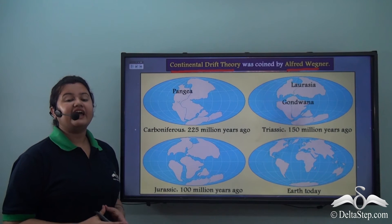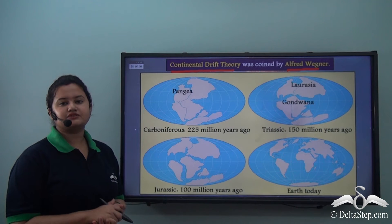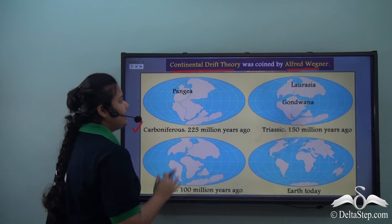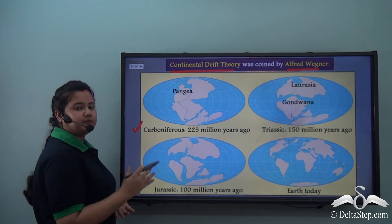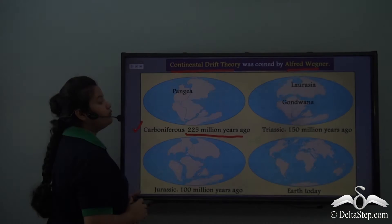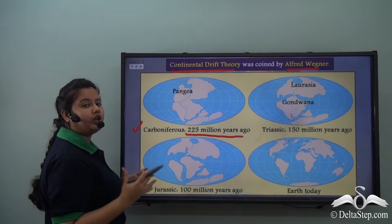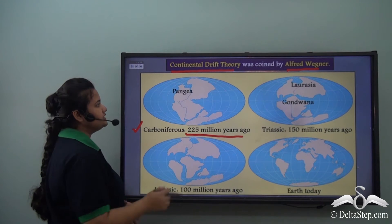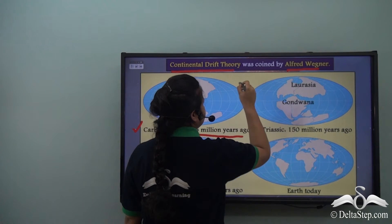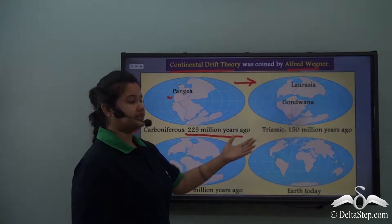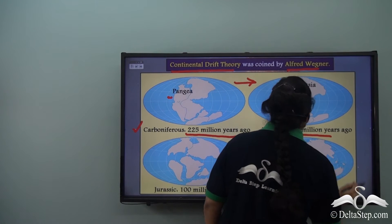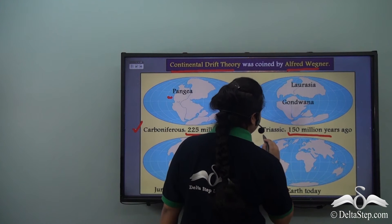In this picture, we can see different periods associated with Earth's formation. The first one is the Carboniferous age. During the Carboniferous age, that is around 225 million years ago, there were no separate continents. Rather, all belonged to a singular landmass known as Pangea. Eventually, Pangea split into several smaller continents and this transition took place around 150 million years ago, and this period is known as the Triassic period.